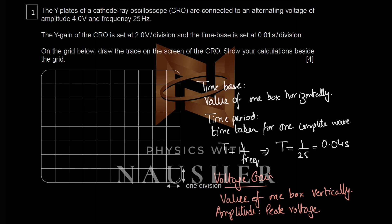Welcome to Physics with Naushir. We're discussing this paper. Before starting the first question, you need to know what a time base is. The time base is the value of one box horizontally, given as 0.01 seconds per division — meaning one box horizontally.